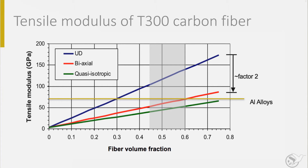Most high-performance composites have fiber volume fractions in the range of 45 to 60%, shown in the shaded area. If you make a cross-ply composite, 50% of the fibers are in the 0 degree direction and 50% in the orthogonal direction. Then the E-modulus is roughly divided by 2 for each fiber volume content. Note that the UD material has a very low E-modulus in the transverse direction, equal to the modulus of the polymer. If you go one step further and look at the so-called quasi-isotropic laminate, consisting of fibers in 0, 90 and ±45 degree directions, the E-modulus is further reduced and is even lower than the E-modulus of aluminum, which is also indicated in the plot.